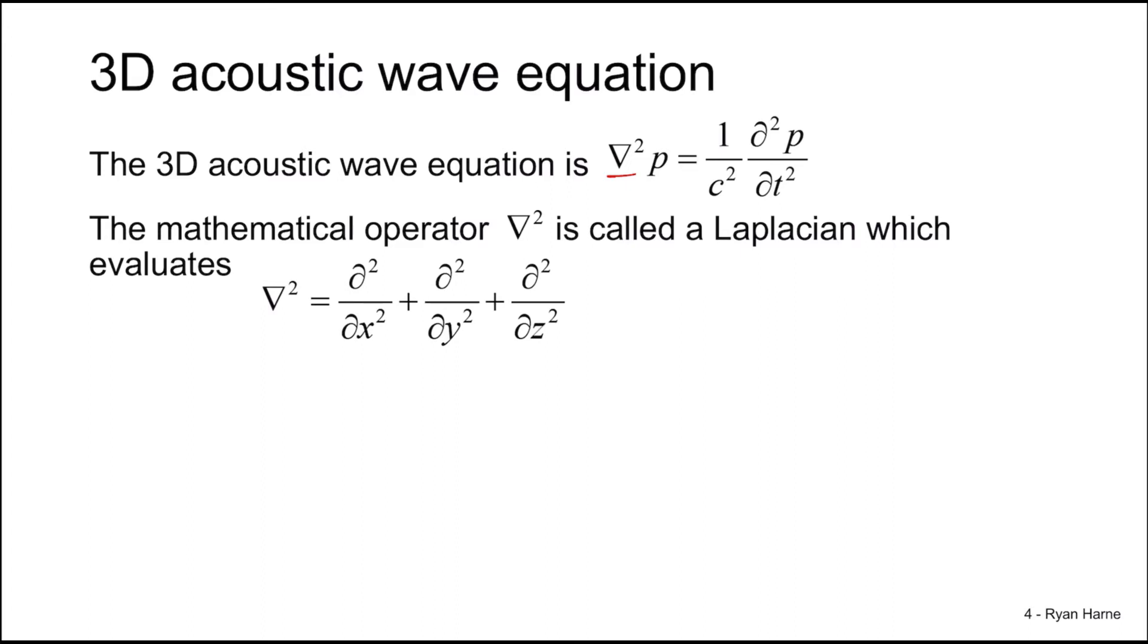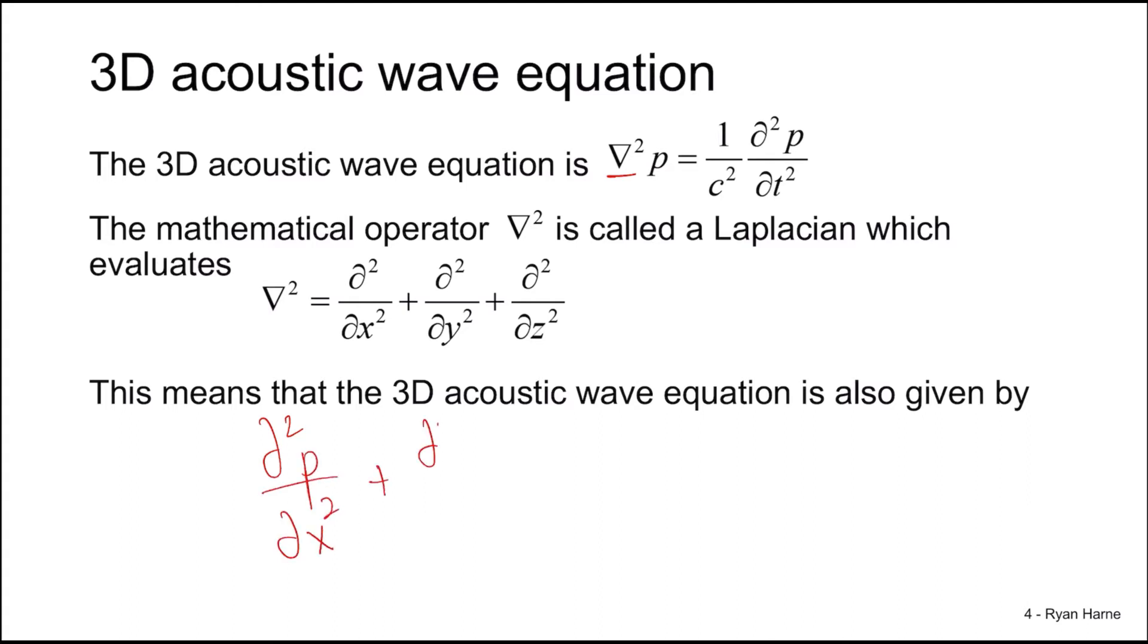This means then that the acoustic wave equation in 3D is the operator acting on p. Effectively, it's similar to multiplying it out. So what we have here is then del squared p del x squared plus del squared p del y squared plus del squared p del z squared is equal to 1 divided by c squared, del squared p del t squared. Again, we find these second orders now existing on all of the spatial dimensions as well as on time as it was before. We still pose that question, do we realize oscillations in space and time?